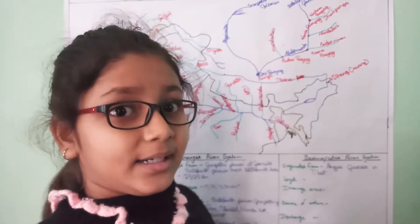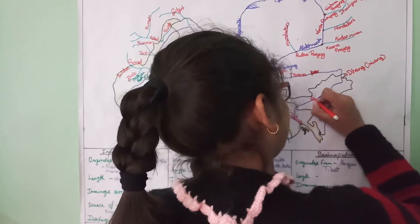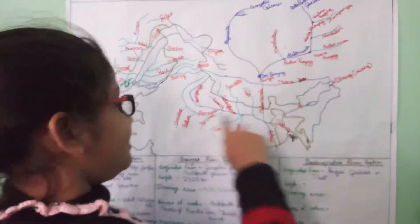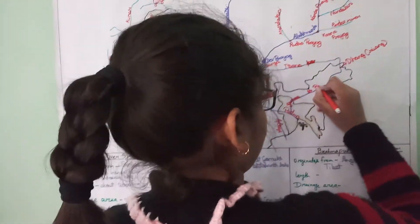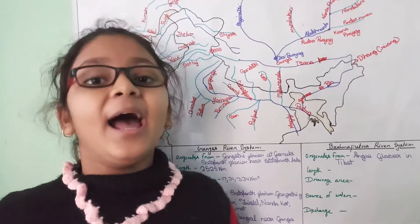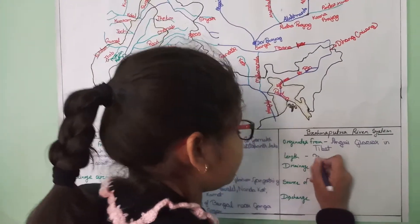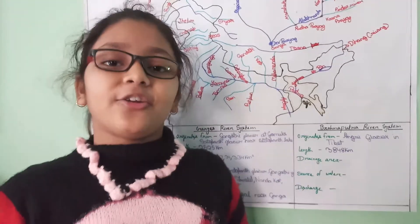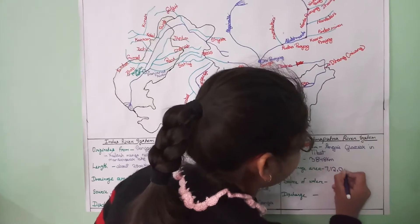Then when it enters the plains of Assam it is known as Brahmaputra. And when it enters Bangladesh it is known as Jamuna — not Yamuna, it is Jamuna. Brahmaputra's total length is 3848 km.